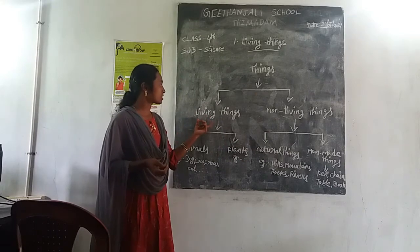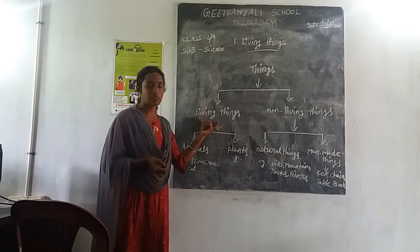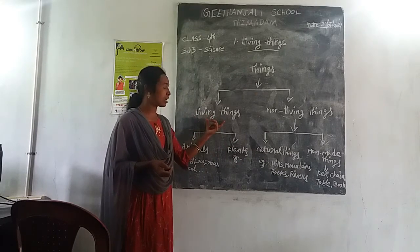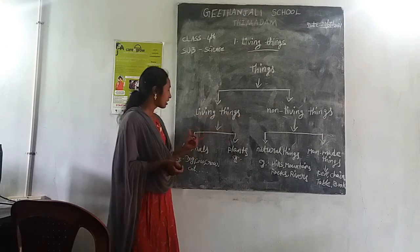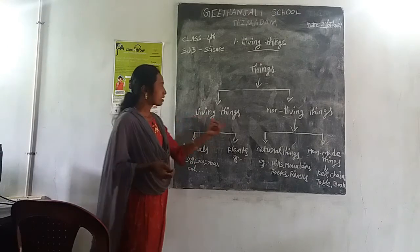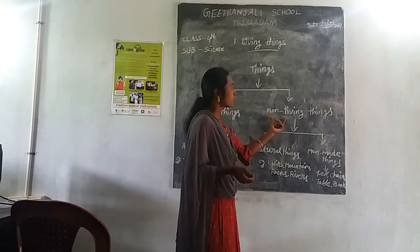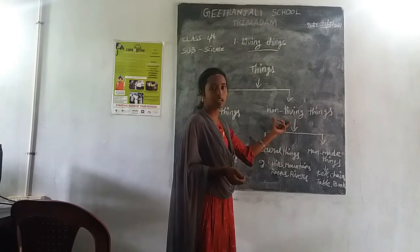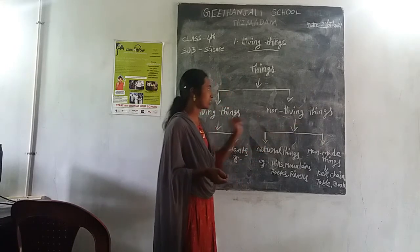Living things means things which have life — that type of things are called living things. Non-living things means things which have no life — that type of things are called non-living things.